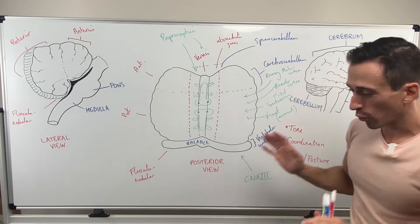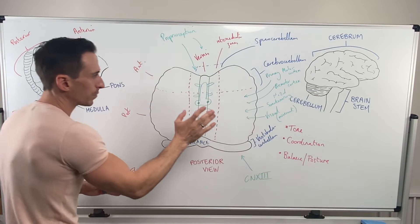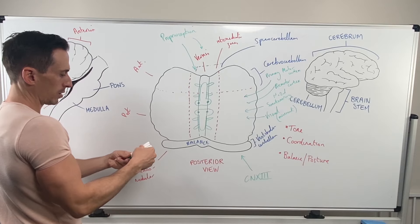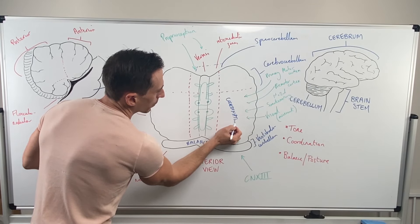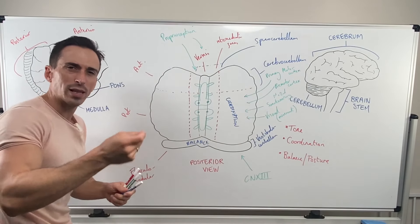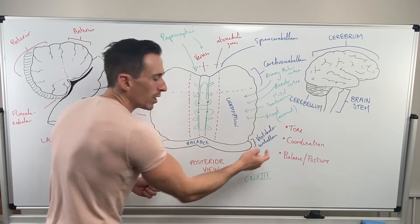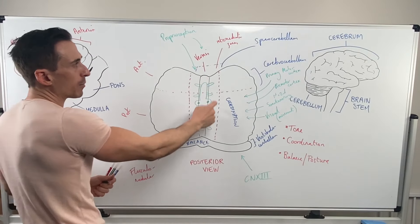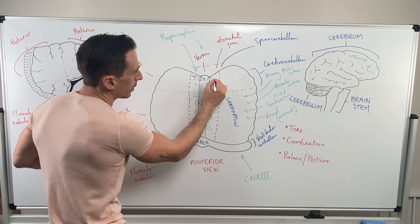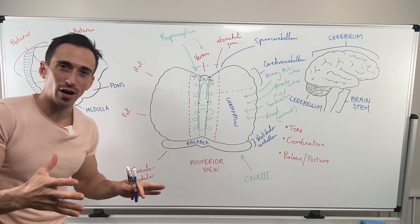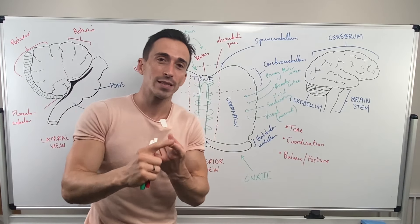Overall, balance and posture comes from the vestibulocerebellum. Coordination — really skillful tasks coming from the motor, pre-motor, somatosensory, and visual inputs — is mainly the cerebrocerebellum. And muscle tone — how contracted or relaxed the muscle is — comes from the vermis and intermediate zones, the spinocerebellum. And this is how we can functionally divide the cerebellum. Hopefully, this gives you a nice summary of the anatomy and physiology of the cerebellum.